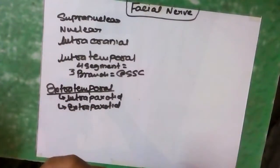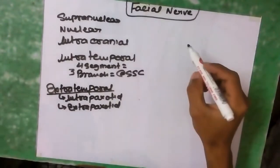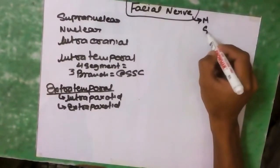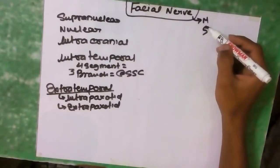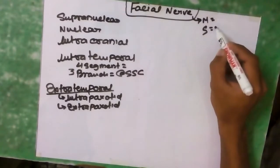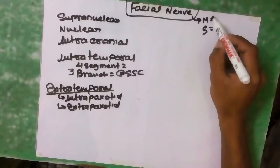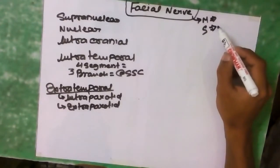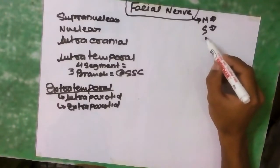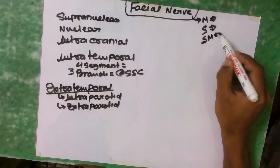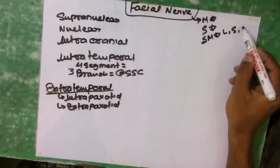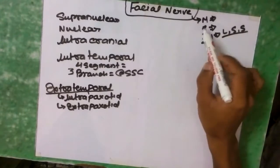Studying about the facial nerve, we need to know its anatomy. The facial nerve is a mixed type of nerve with motor and sensory activities. It has approximately seven thousand motor axons and three thousand sensory axons. Motor supply goes to the facial muscles of the face; sensory supply to the pinna and external auditory canal. There is also secretory motor function helping secretion of the lacrimal gland, submandibular, and sublingual salivary glands.